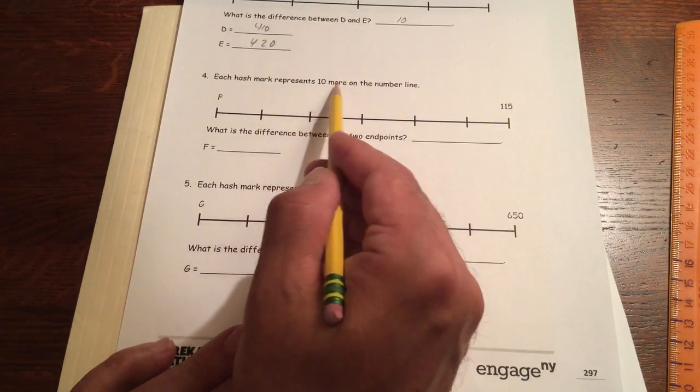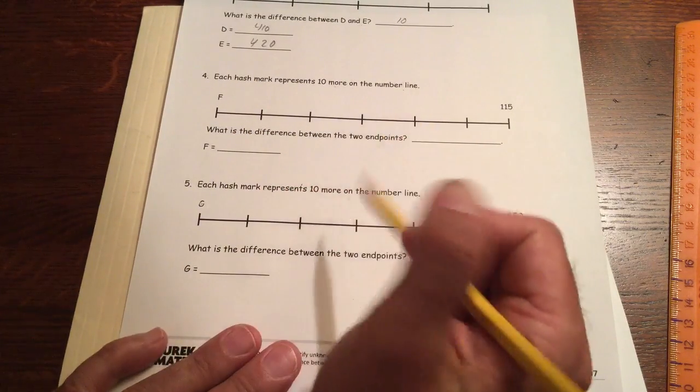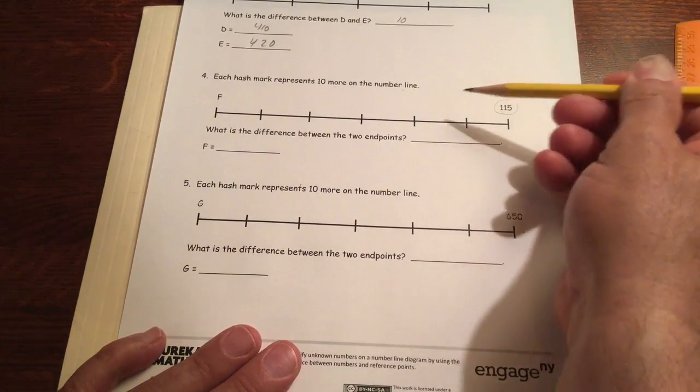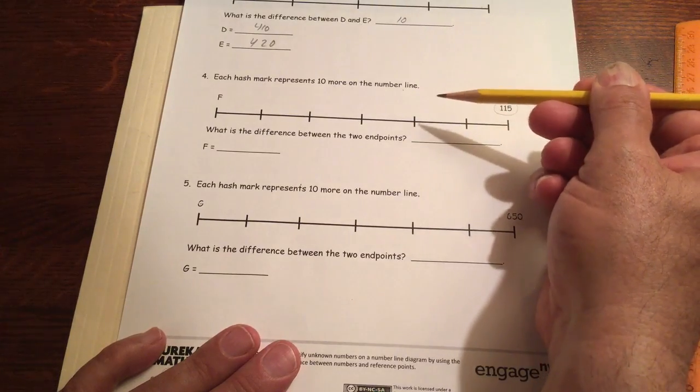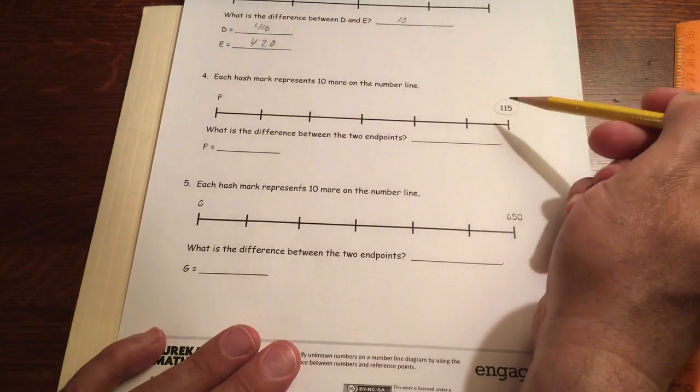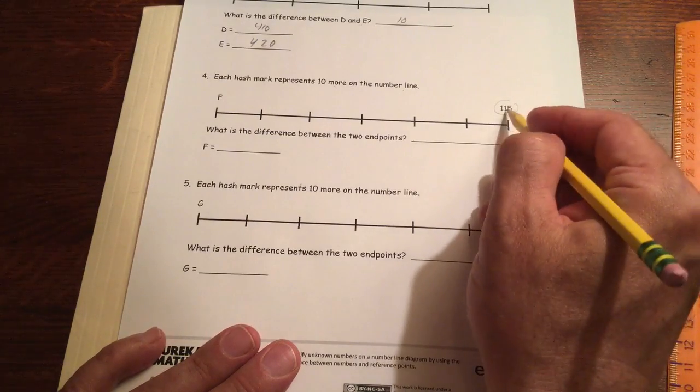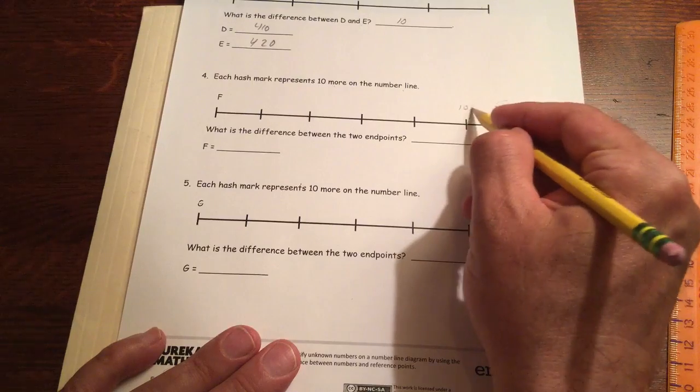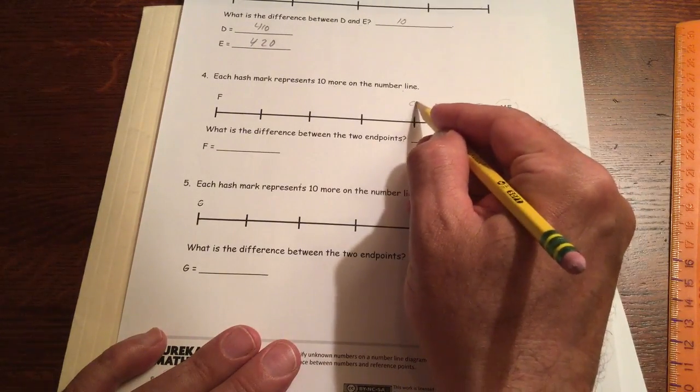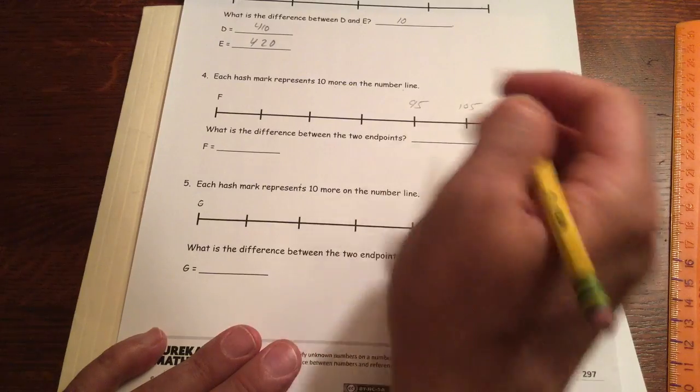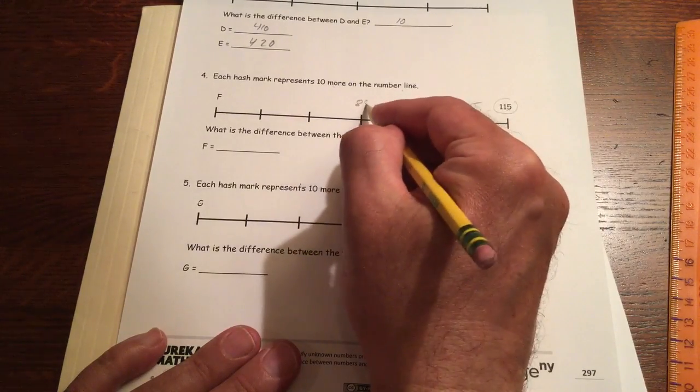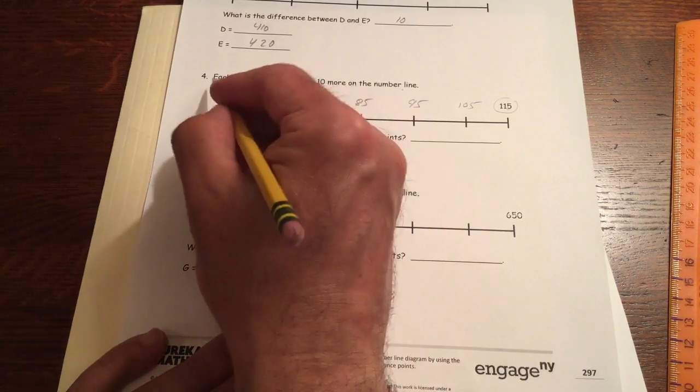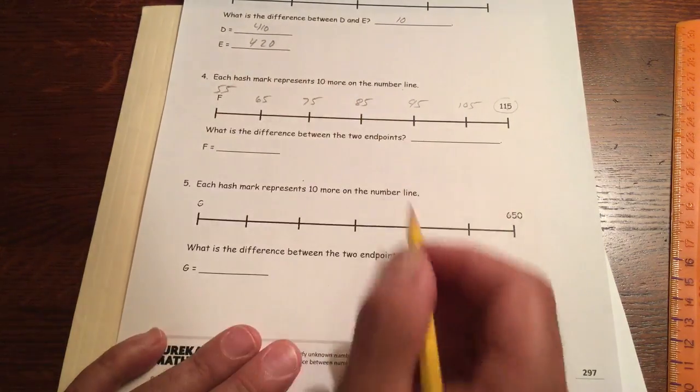Each hash mark represents 10 more on the number line. So now we're counting by 10s. And it only gives us this one here at the end. So that means we got to go backwards. So each number going this way is going to be 10 less. So we're going to figure out 10 less than 115. That's 105. And then 10 less is 95. And 10 less than that is 85. And 10 less than that is 75. And we have 65. And then we get to 55. So we've got them all figured out now.